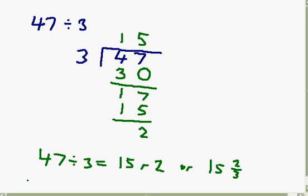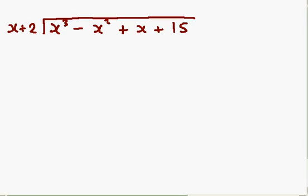Now, I'm going to show you polynomial division, which works in much the same method. It looks more complicated straight off, but don't be put off by that. We've got x cubed take away x squared plus x plus 15 under the bus stop. And I'm going to divide that by x plus 2.